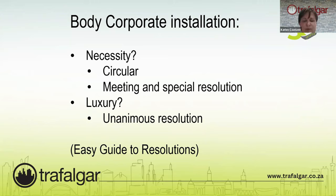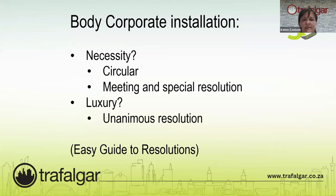If it is decided that it is a necessity, prescribed management rule 29 states that the trustees must send a circular to all owners explaining what they want to do, what it will cost, and how those costs will be paid. Should nobody object or request a meeting within 30 days, the trustees can go ahead with that improvement. Should somebody object or request a meeting, the trustees must call a meeting.